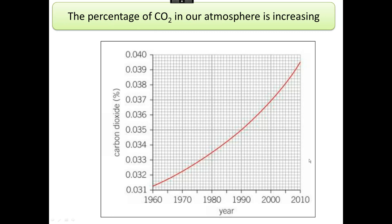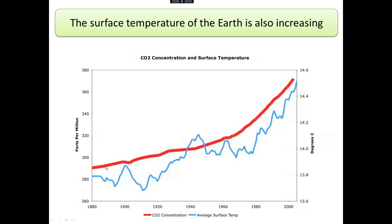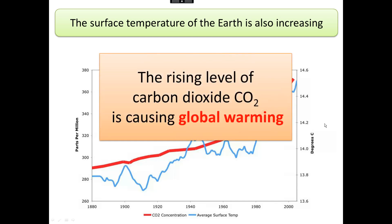So the amount of carbon dioxide in our atmosphere is increasing — the percentage is going up over time. It's currently around about 0.04%, but it is increasing. At the same time, the surface temperature of the Earth is increasing; the Earth is getting warmer. We call that global warming, and it is correlated to carbon dioxide. As carbon dioxide increases, so the Earth's temperature is increasing. The rising level of CO2 is causing global warming.